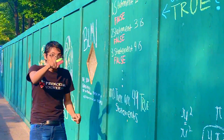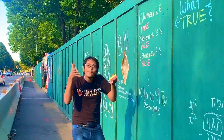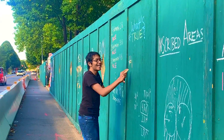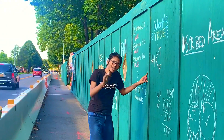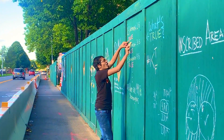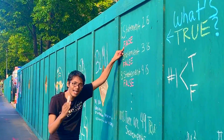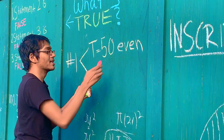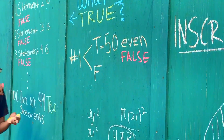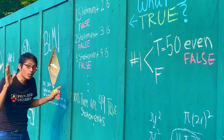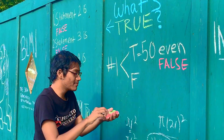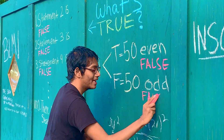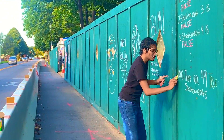First, we make a tree diagram. Statement number one can either be true or false. If statement number one is true, then statement number two is false, which means all the even-numbered statements are false — so we'll have 50 even false statements. On the other hand, if statement number one is false, then all the odd statements will be false — 50 odd false statements.